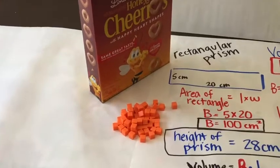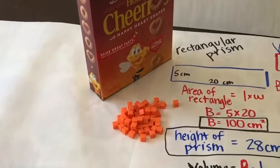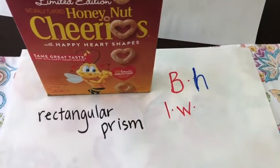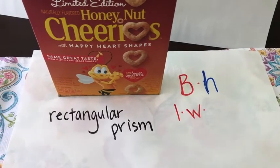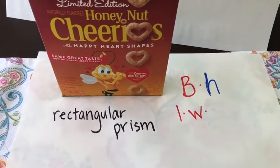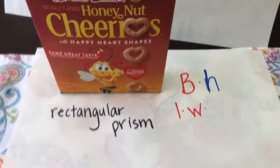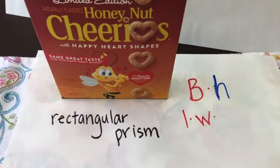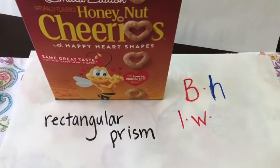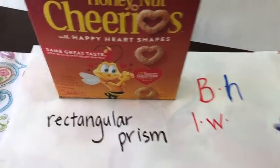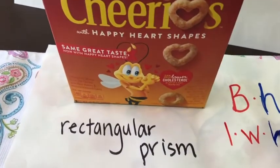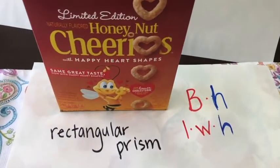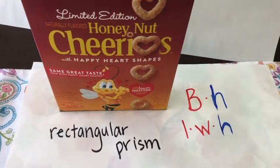That means you could put 2800 centimeter cubes into that cereal box. We know the area of a rectangle is length times width, so the volume of a rectangular prism is length times width times height.